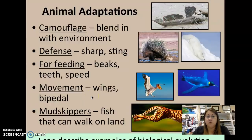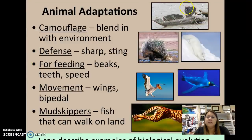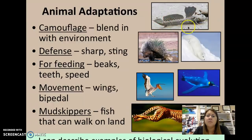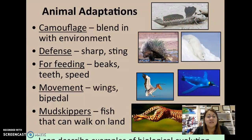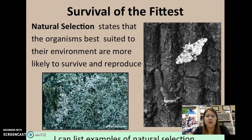They walk on four feet. Mud skippers are another really interesting organism — this is a picture of a mud skipper. This is a fish that is able to walk on land. It comes up out of the water and has little appendages that help it move along, but it also lives in the water. It's an aquatic organism that can come on land, which is really unique.